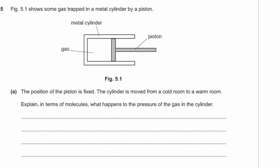Moving to a warm room means the kinetic energy of the gas molecules increases — they move faster. Pressure on the cylinder walls arises because molecules hit the metal and bounce back, causing a change in momentum. If the molecules move faster, the change in momentum is greater, producing a bigger force. Since pressure equals force over area, greater force means greater pressure.